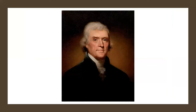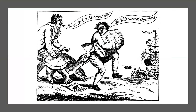Seeking to avoid war, President Thomas Jefferson demanded reparations and the end of impressment. Jefferson chose economic coercion. The Embargo Act of 1807 virtually prohibited the export of any goods from the United States by sea or by land. This turned out to be a self-crucifying embargo that was not well received in the New England states and New York. In fact, the embargo caused an economic depression in 1808.